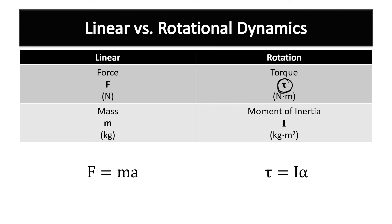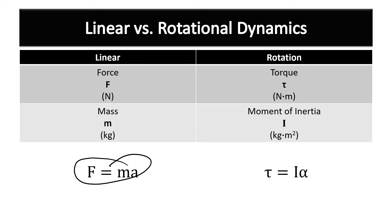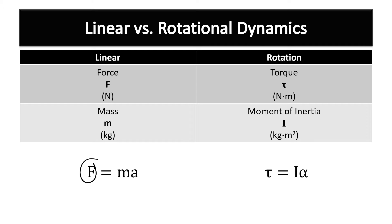We use the Greek letter tau to represent torque, just like we use the letter F to represent force. In a subsequent lesson, we'll talk about how the moment of inertia accounts for an object's mass while it's rotating. Then we'll revisit Newton's second law and say torque is equal to the moment of inertia times angular acceleration, just like force equals mass times acceleration.